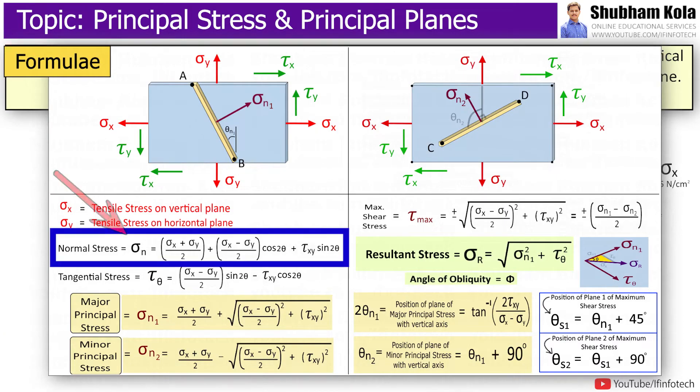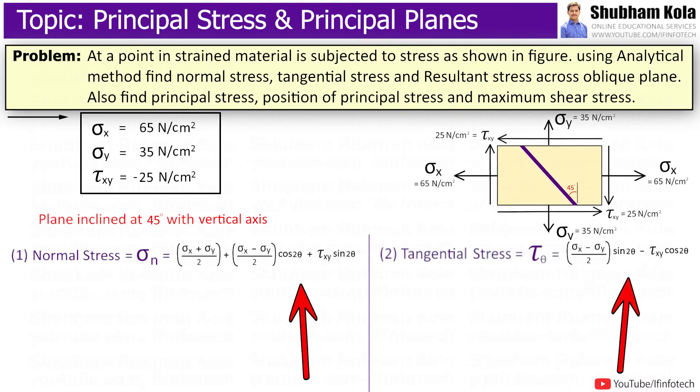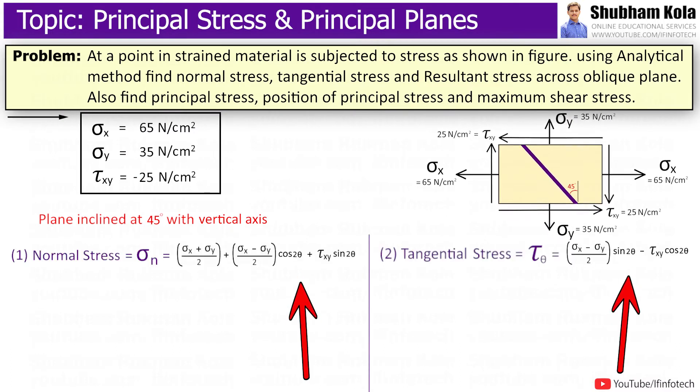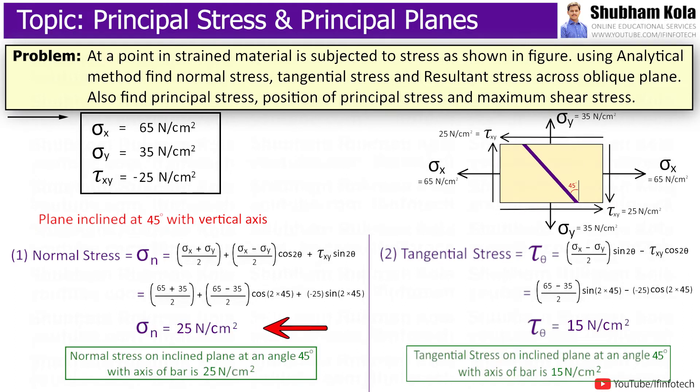Here, we need to find out normal stress and tangent shear stress on 45 degree inclined plane. Therefore, in formula, theta value is 45 degrees. So put the values of stresses, and I will calculate normal stress on inclined plane will be 25 newton per centimeter square, and tangent shear stress on inclined plane will be 15 newton per centimeter square.